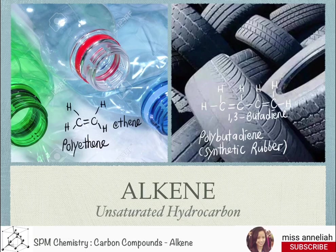Butadiene, which has two carbon-carbon double bonds, can be used to make polybutadiene, which is a synthetic rubber used to make tires.